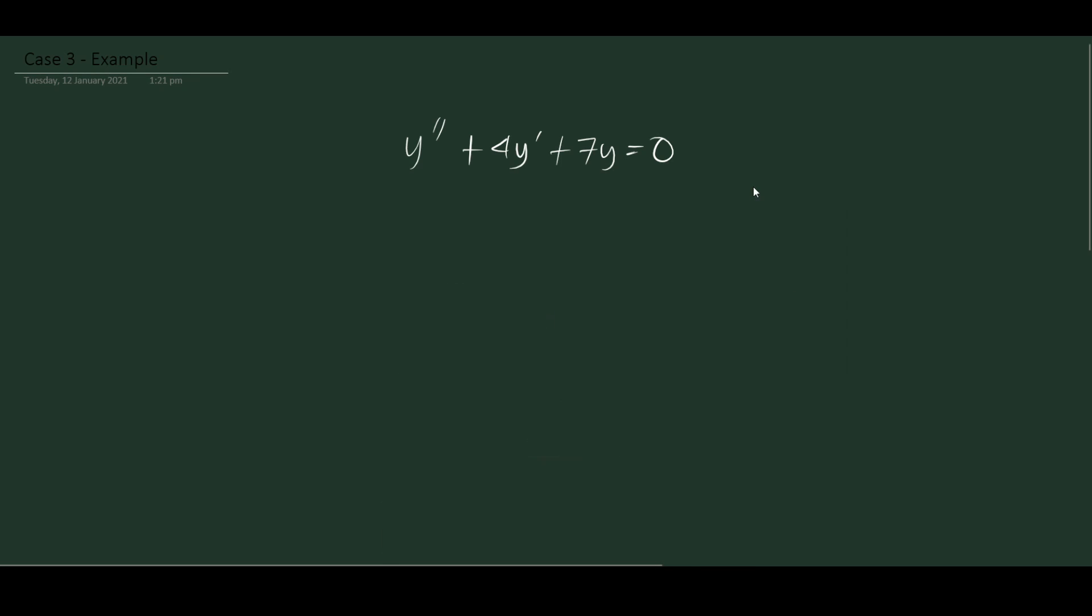Hello everybody. So we have here an example of case 3. We have y double prime plus 4y prime plus 7y is equal to 0.